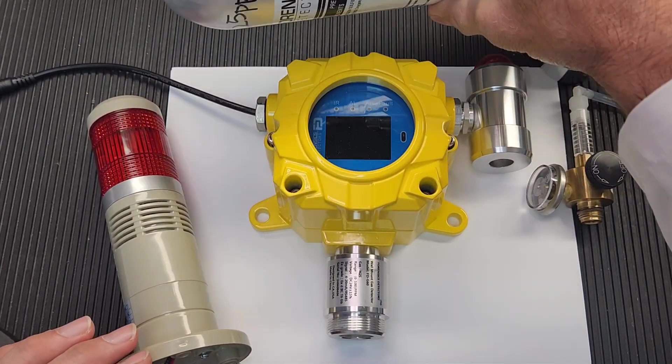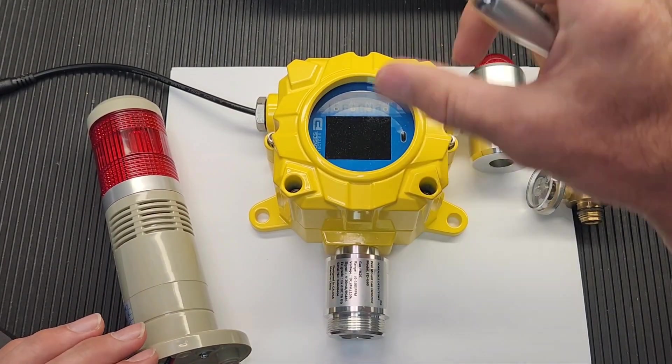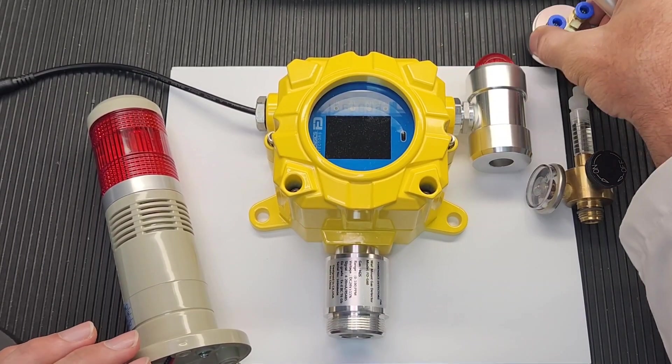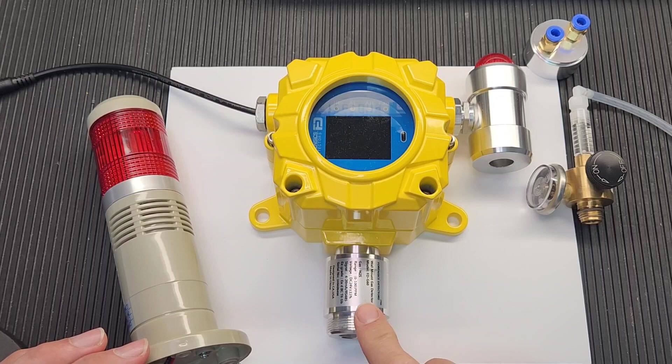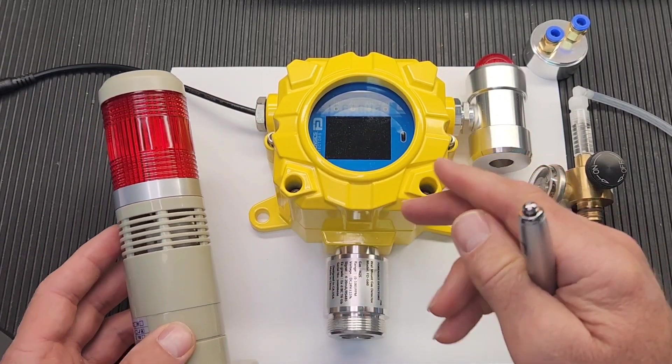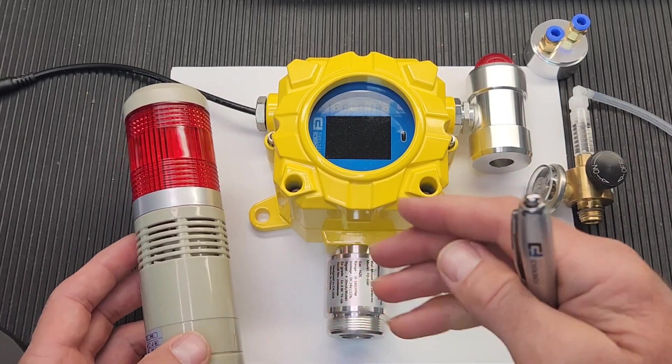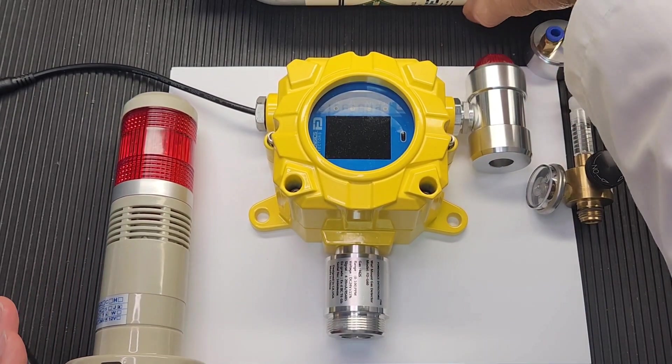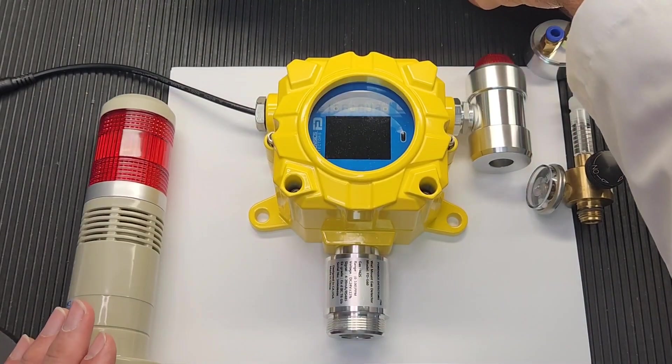If you have bump gas, that's fine. You don't need the regulator. You don't need the cap. You could just spray it on the sensor to trigger the alarm to confirm operation. That's how we commission these units when we perform work. You have to do a bump test. In this case, I'm using calibration gas for my bump gas.